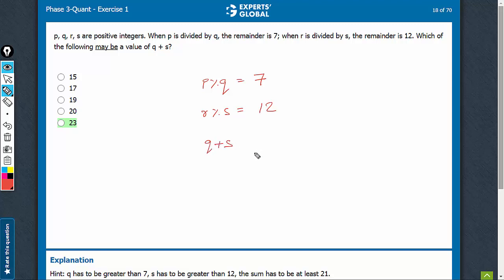The question may look complex, but it's a very simple question. When the remainder of a number with q is 7, it simply means that q has to be greater than 7. And similarly, when the remainder of a number with s is equal to 12, s has to be greater than 12.